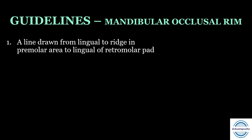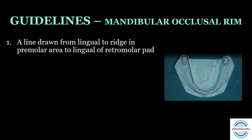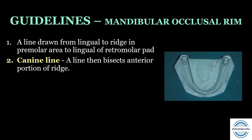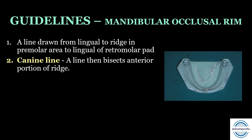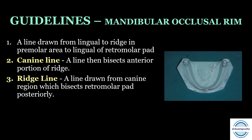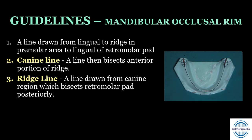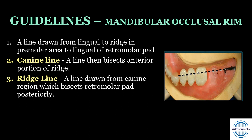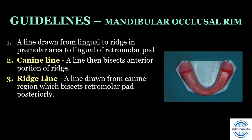For the mandibular occlusal rims: first, a line is drawn from the lingual of the ridge in the premolar area to the lingual of the retromolar pad — this marks the lingual extent of the occlusal rims, which should not extend beyond this line. Second, the canine line bisects the anterior portion of the ridge and marks canine position. Third, the ridge line drawn from the canine region bisects the retromolar pad posteriorly, marking placement of the central grooves of posterior teeth.